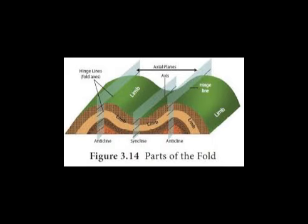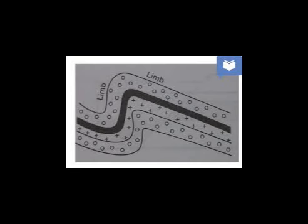For a fold mountain, the central or imaginary line which divides a fold into two equal halves is known as the axis or axial plane, as shown. The sides are called the limbs and the topmost is called the crest.